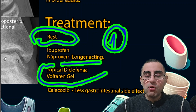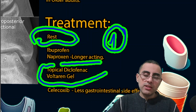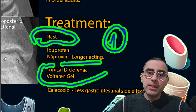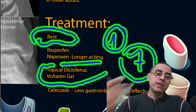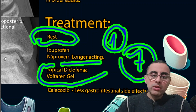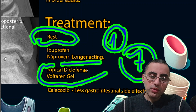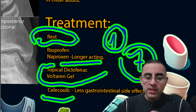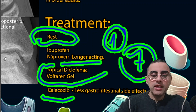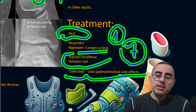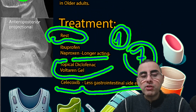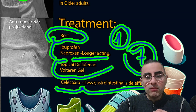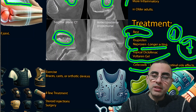Topical diclofenac does not significantly irritate the gastrointestinal tract — its systemic effect can be up to seven times less compared to oral ibuprofen or naproxen. Celecoxib is another important medication; it is a newer NSAID that is more specific and has fewer gastrointestinal side effects and is considered an option when there is GI risk. The most commonly used medications overall remain ibuprofen and naproxen, with diclofenac and celecoxib as further options.